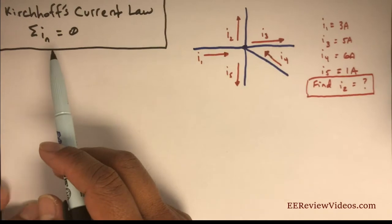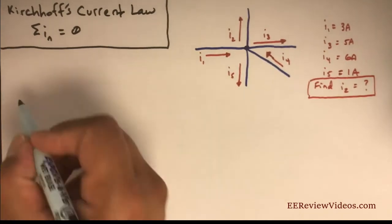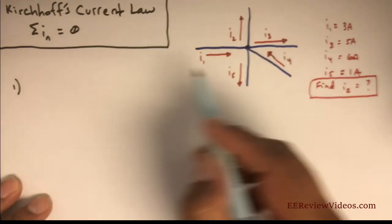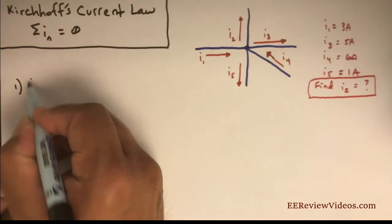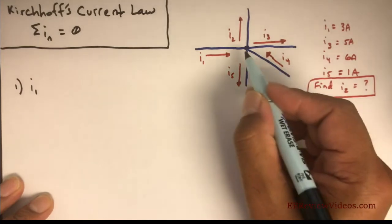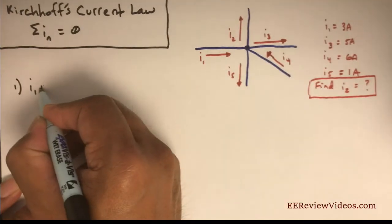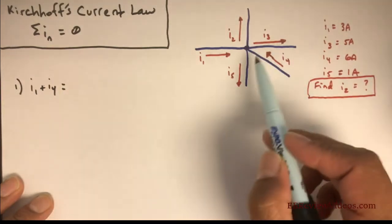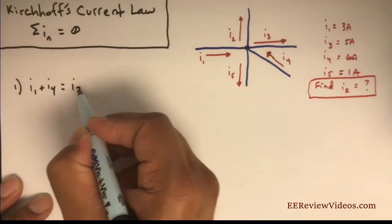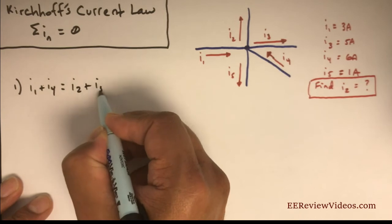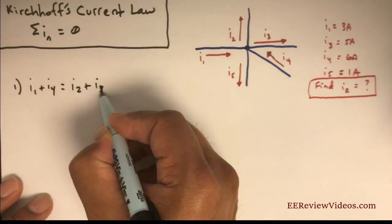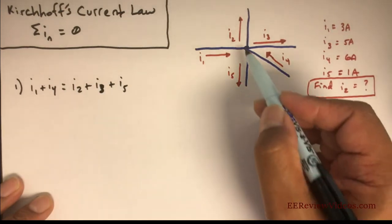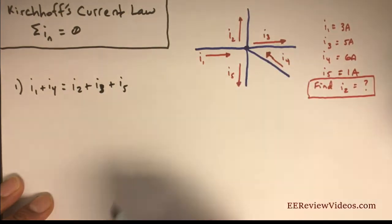Using Kirchhoff's Current Law, let's write the following: all the currents entering the node, I1 plus I4, should equal all the currents leaving the node - I2 plus I5. Let's put I3 in order here, so I2 plus I3 plus I5.